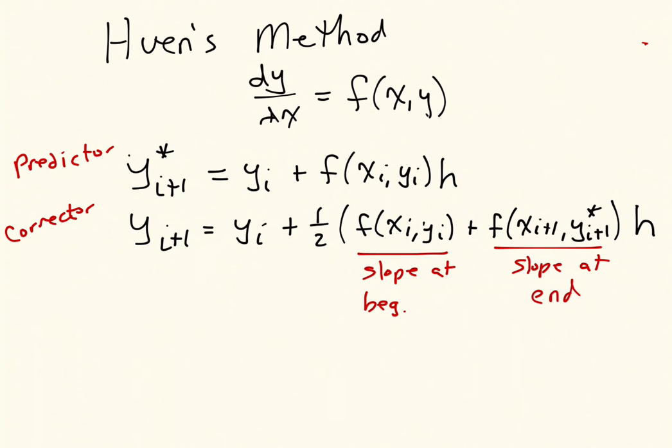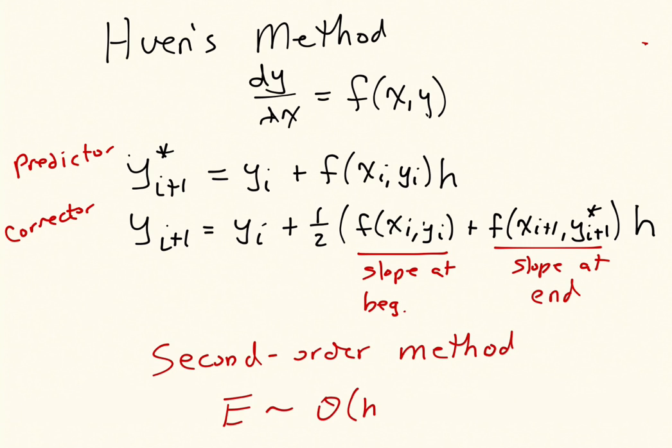And you put that together and you get Huen's method. Now when we did the error analysis for Euler's method, we said that Euler's method was a first order method. You'll find out that this is a second order method, which means that the error E is proportional to the step size squared. So if you reduce the step size by a factor of 2, the error actually goes down by a factor of 4 when you use Huen's method.